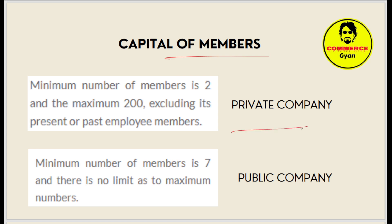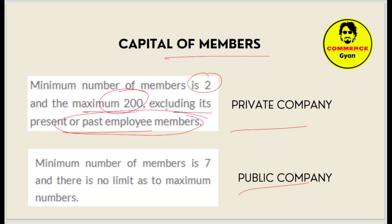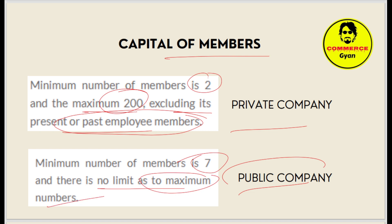Regarding the number of members: in a private company, the minimum is 2 and the maximum is 200, excluding present and past employees. In a public company, the minimum is 7 and there is no upper limit on the maximum number of members.